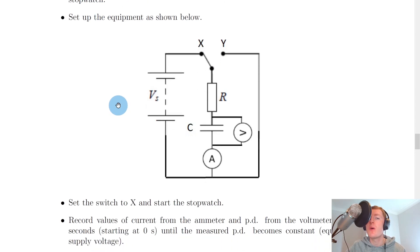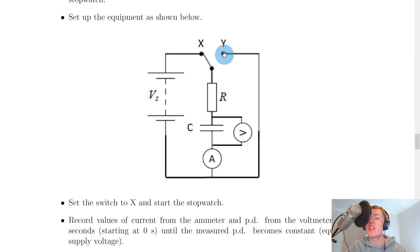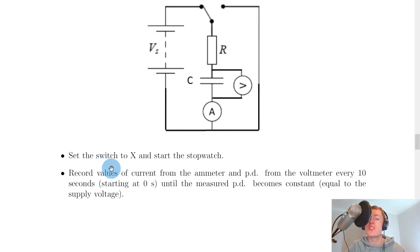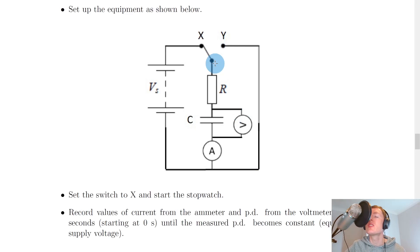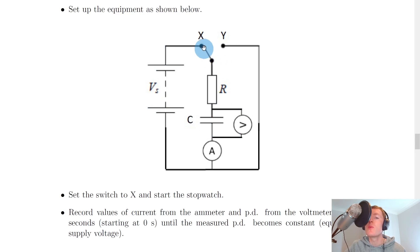Set up the equipment as shown in this circuit diagram. We've got a 4.5 volt battery, a resistor and capacitor in series with an ammeter, and a voltmeter in parallel with the capacitor. There's also a switch which can go between positions x and y. Set the switch to x to charge the capacitor using the battery. In the next video for discharging, the switch moves to position y where the battery is no longer needed.